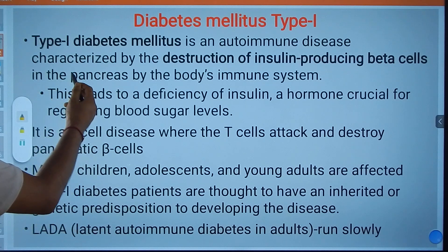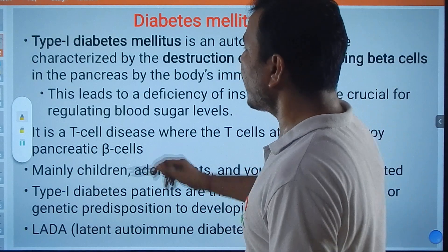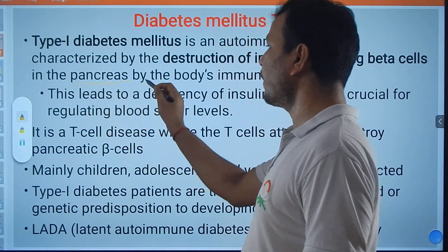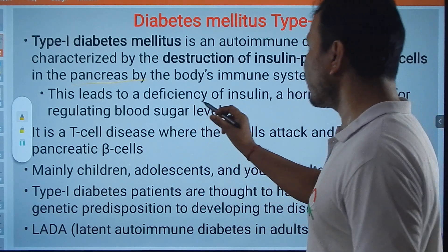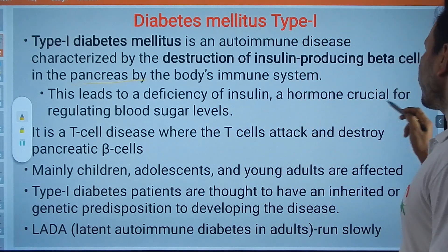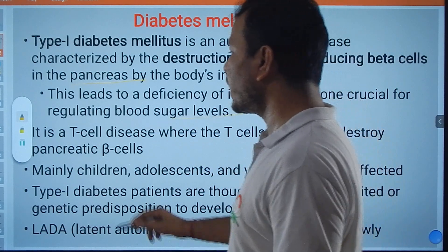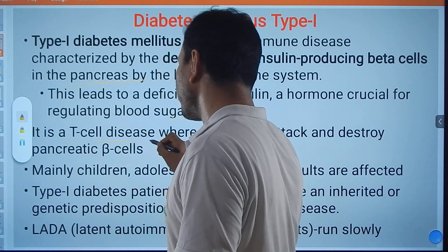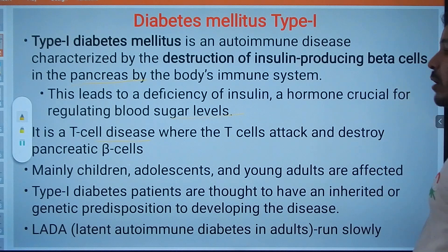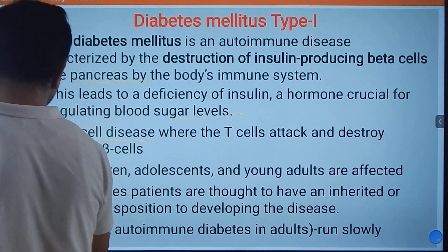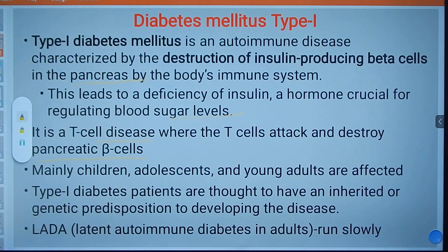Type 1 Diabetes Mellitus is characterized by the destruction of insulin-producing beta cells in the pancreas by the body's immune system, which leads to a deficiency of insulin — a hormone responsible for regulating blood sugar levels. It is a T-cell mediated disease, where T-cells attack and destroy the pancreatic beta cells.